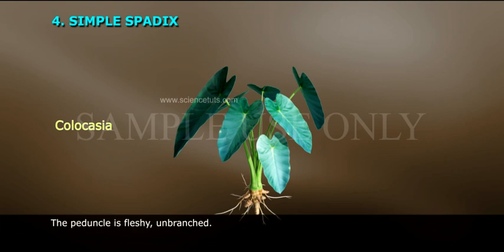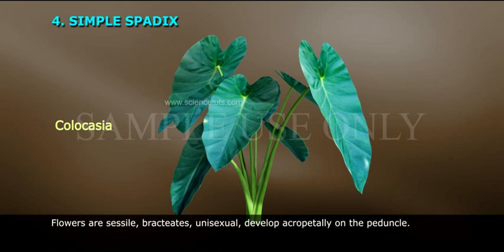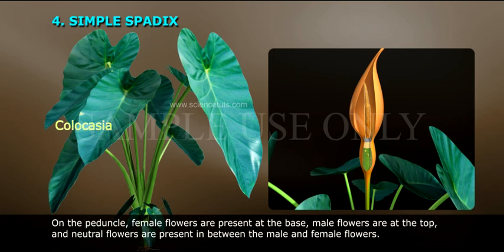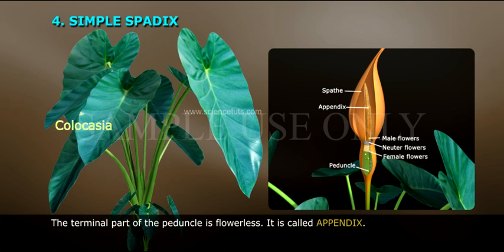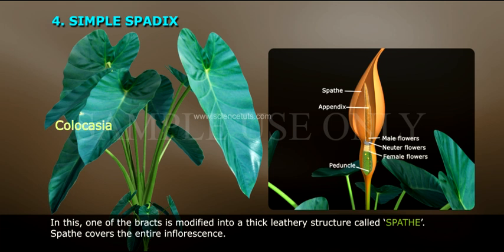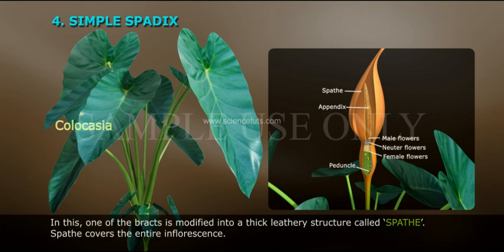Simple spadex: The peduncle is fleshy and unbranched. Flowers are sessile, bracteate, unisexual, develop acropetally on the peduncle. Female flowers are present at the base, male flowers at the top, and neutral flowers are present in between. The terminal part of the peduncle is flowerless and is called the appendix. One of the bracts is modified into a thick leathery structure called the spathe.